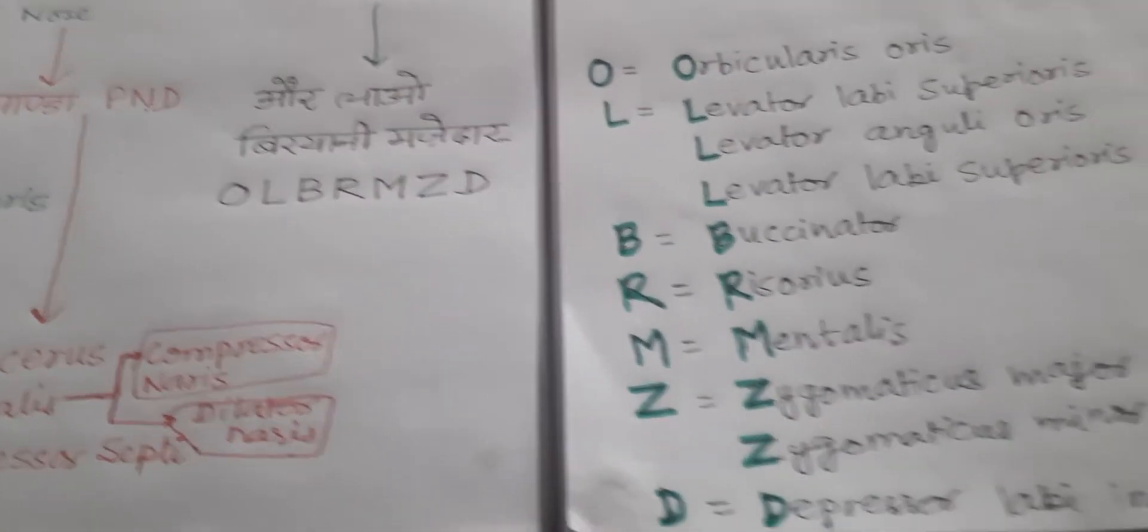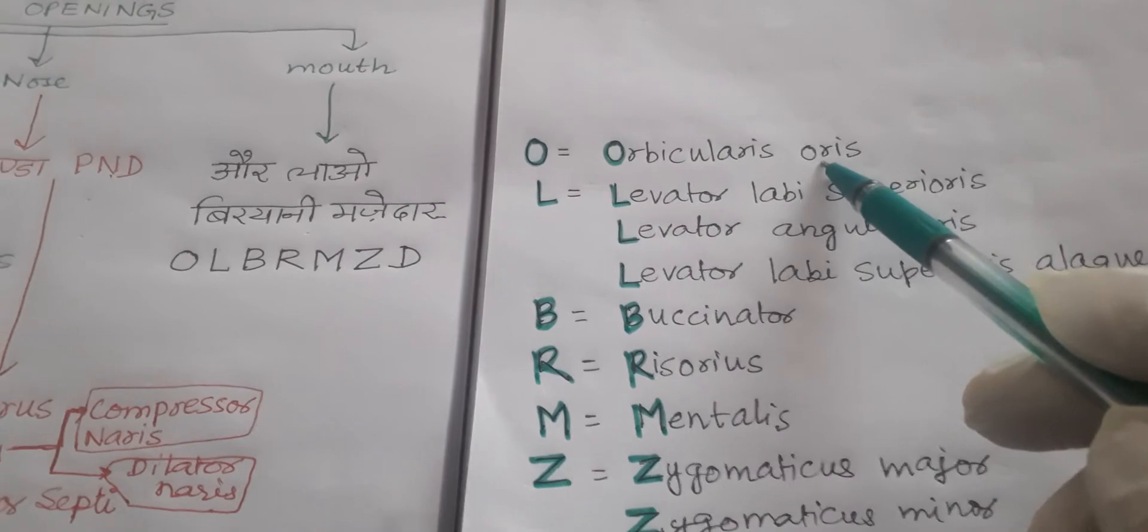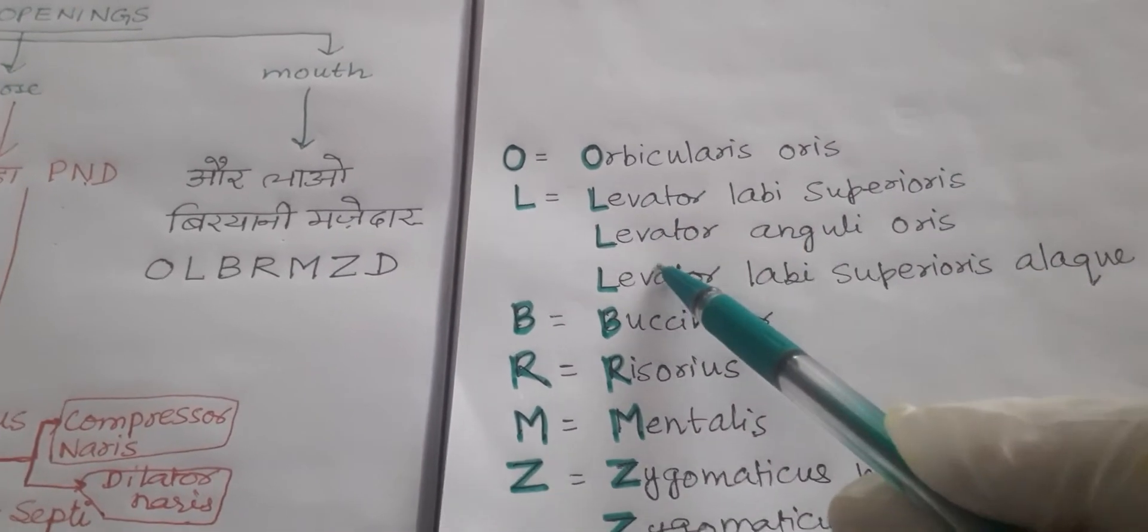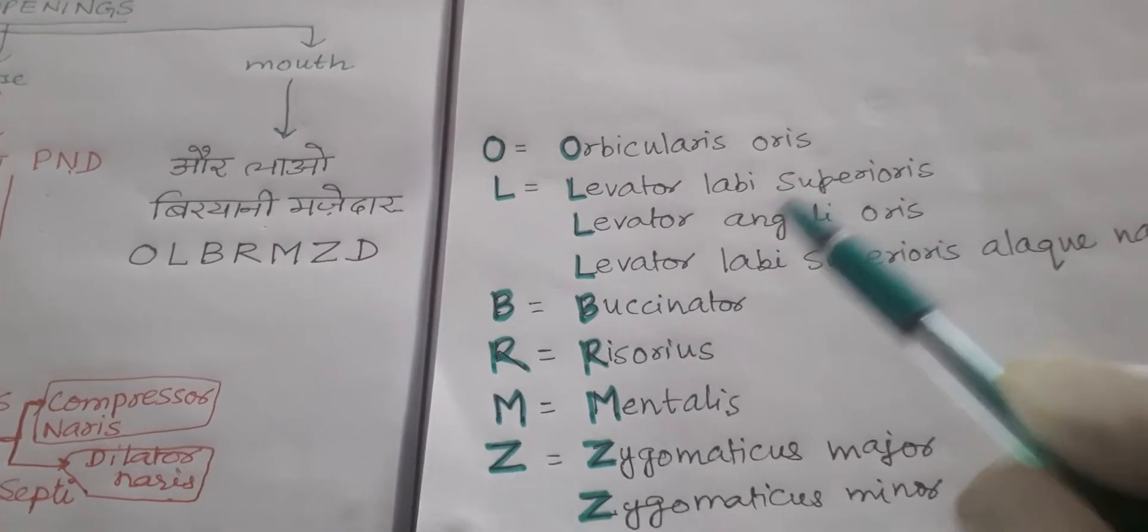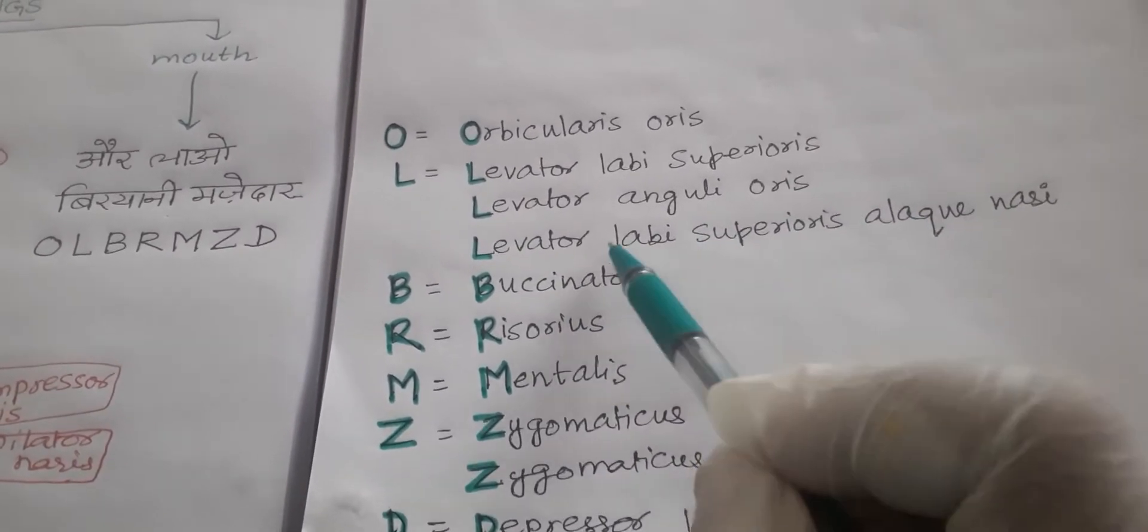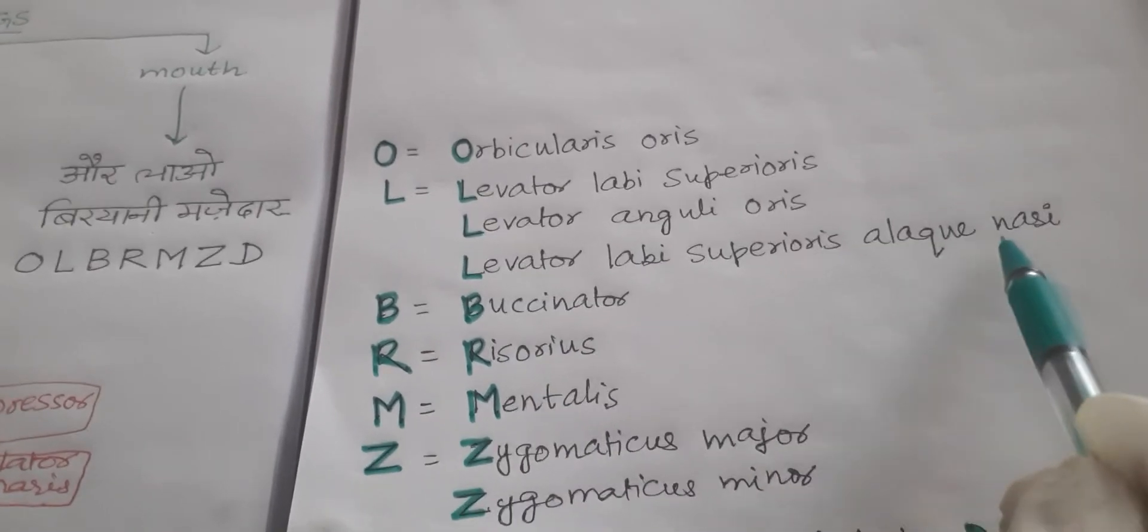O for orbicularis oris, L-A-U: levator labii superioris, levator anguli oris, levator labii superioris alaeque nasi - the longest name muscle in our body.